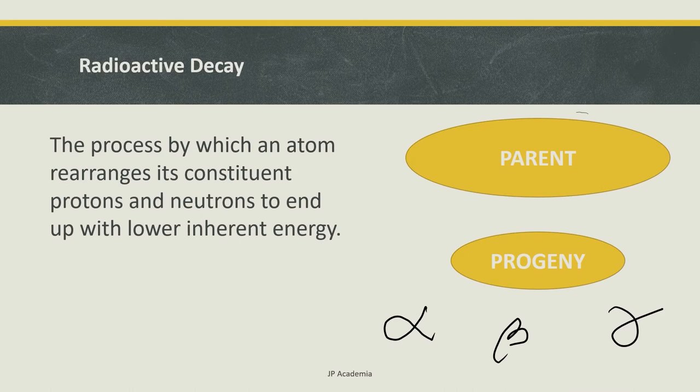Radioactive decay happens spontaneously, and energy is released in the process. The result of this process is called the daughter atom, or sometimes we call this the progeny atom, with less inherent energy than the preceded atom. So from the parent, this will decay to its progeny atom.